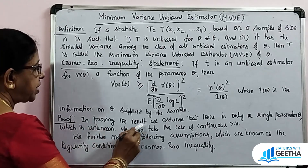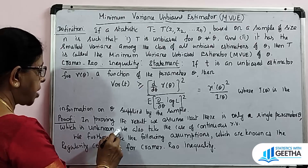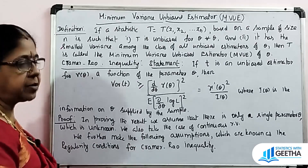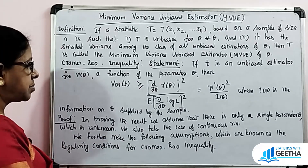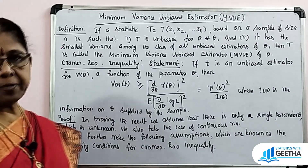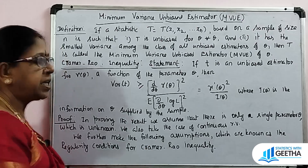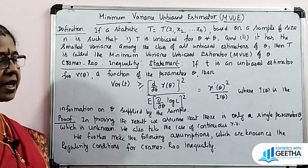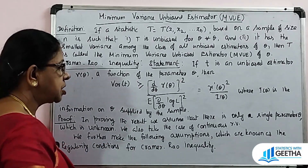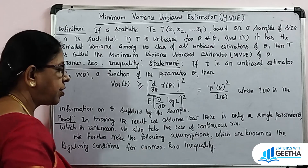In proving this result, we assume there is only a single parameter theta which is unknown, and we take the case of a continuous random variable. We further make the following assumptions, which are known as regularity conditions for the Cramér-Rao inequality.